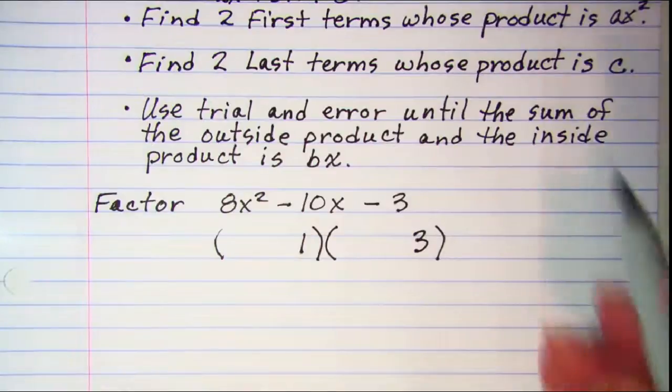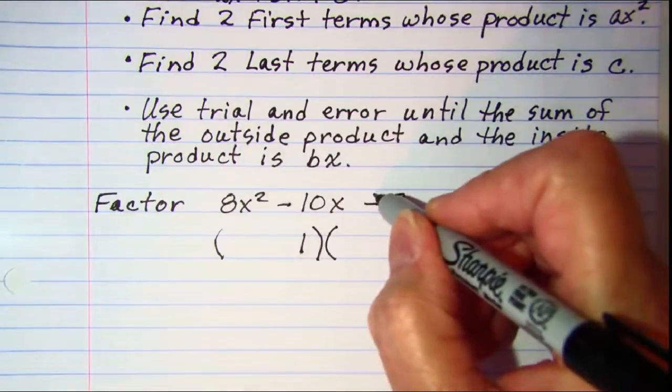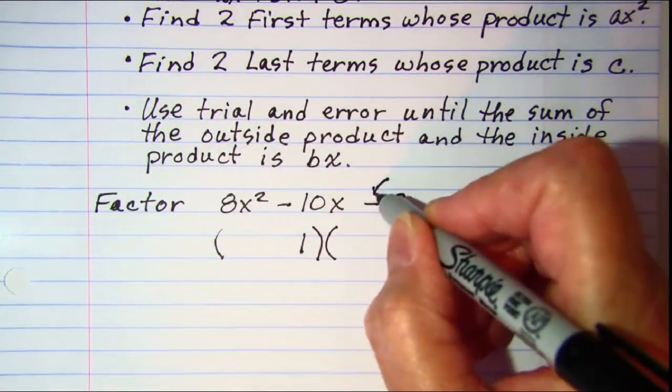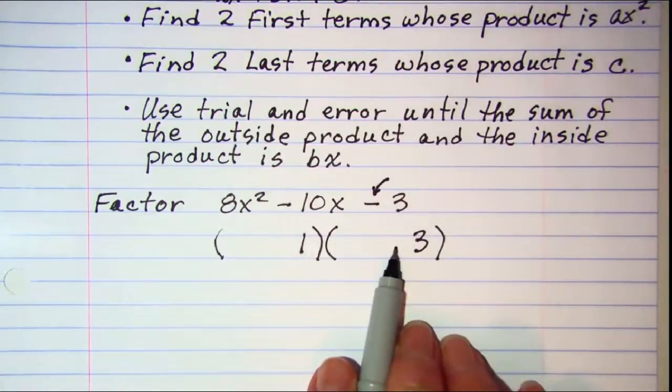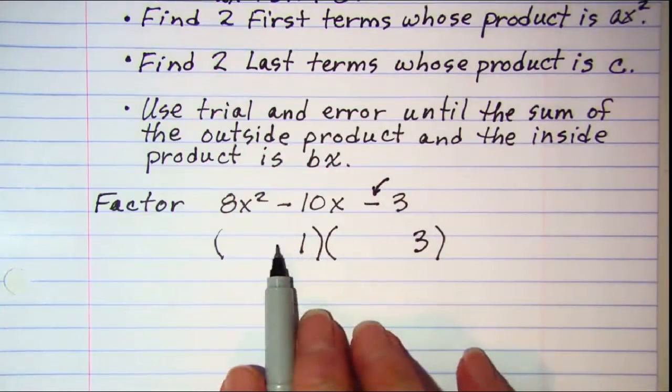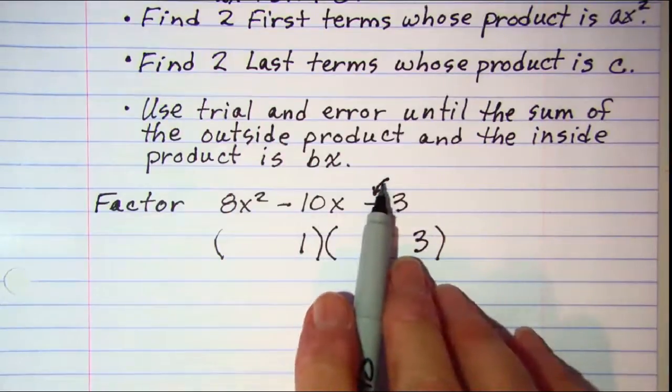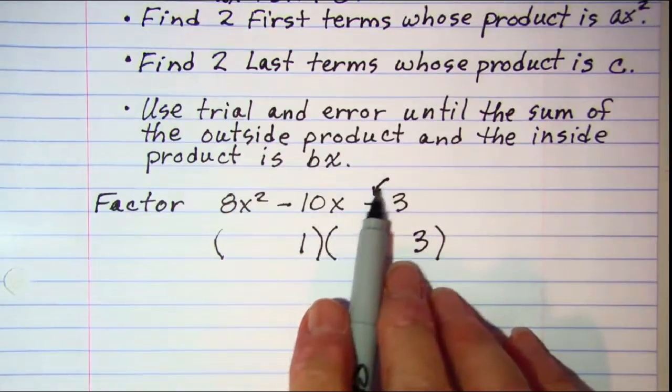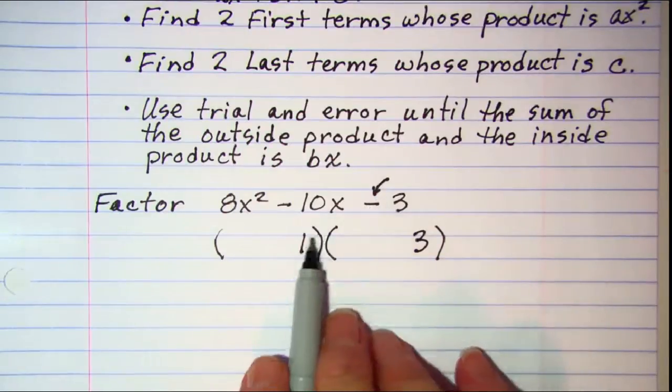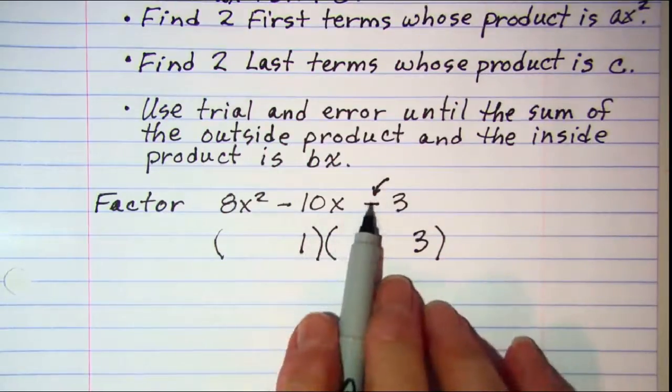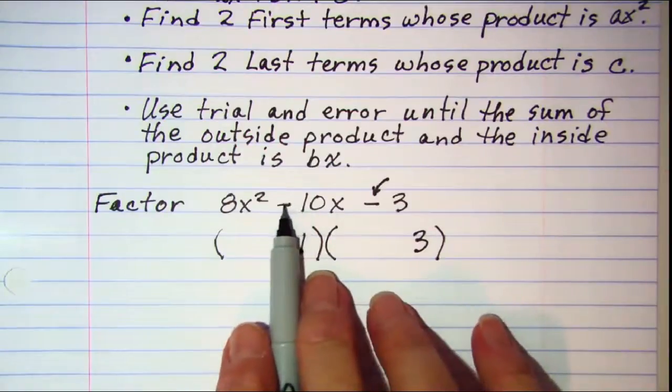Also notice that because this is minus, that means that these numbers are going to be opposite in sign and the difference of the numerical values, not the positive and negative, but just the absolute values, the difference has to be a negative 10.